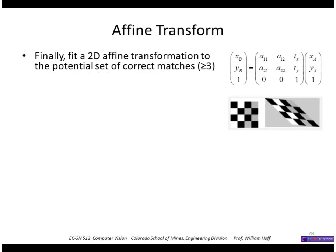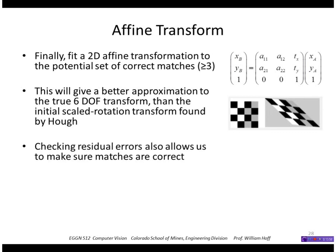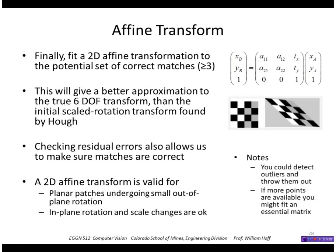But we'll go one step further and fit a transformation to those features that we think are correct. The transformation will be a 2D affine transformation, and that can allow shearing, rotation, scale, etc. So this is a better approximation than just the simple 2D scale rotation that we found with the Hough transform. And if we check the residual errors of these matches, we can potentially throw out outliers. Now of course, if we had - this requires a minimum of three points, but if we had more than three, we might want to fit an essential matrix to allow even better transformation.